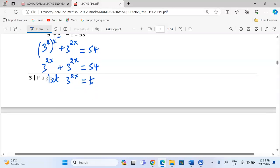So with this now, we can talk about t plus t equals to 54, which means 2t is equivalent to 54. And hence, t is equivalent to 27.